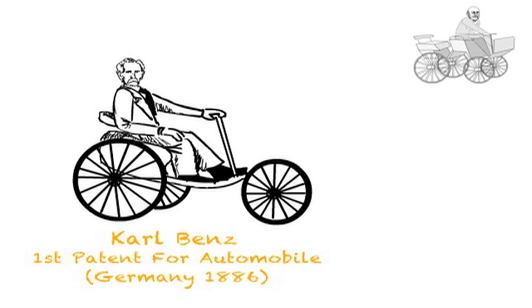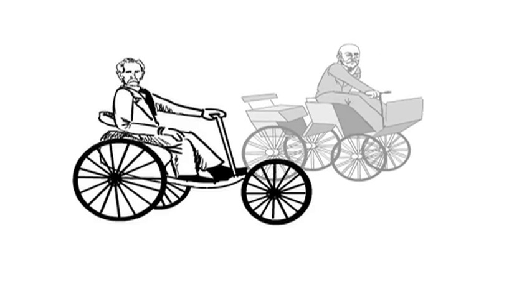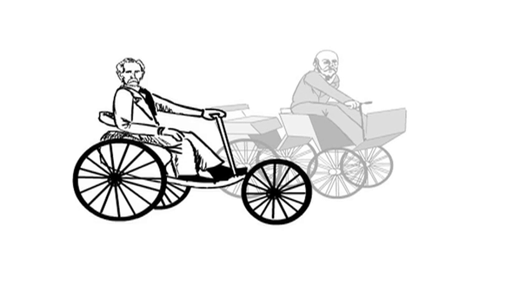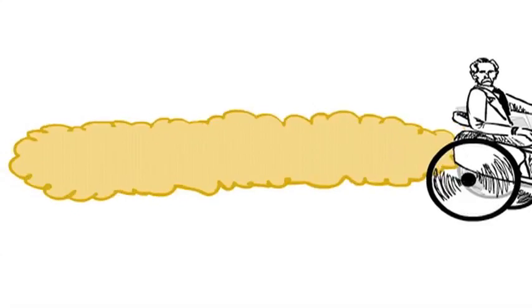In the same year, fellow German Gottlieb Wilhelm Daimler, with the help of Wilhelm Maybach, built his own version of the automobile. Had they tried to race each other, the winner would have scorched the loser at a fireball speed of approximately 8 miles per hour.